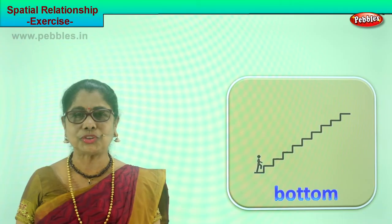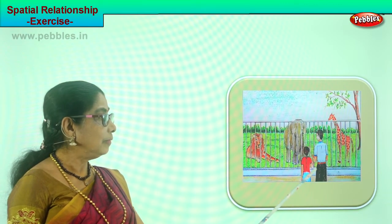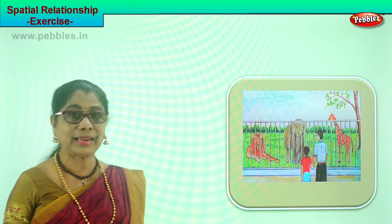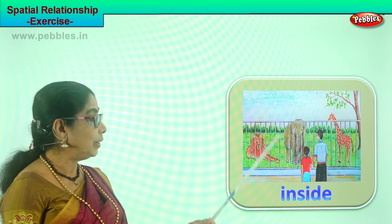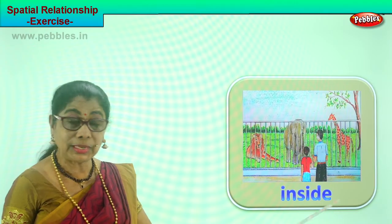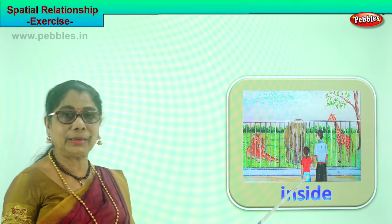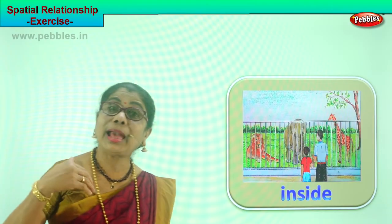Let's look at another picture. What is it? It's a zoo. Where are the children? Where is the little girl and father standing? Outside the zoo. What are they doing? Looking into the cages. What is inside the cage? Animals. In the zoo you will find animals are inside, and we who go to see are outside. We have to stand outside and look.